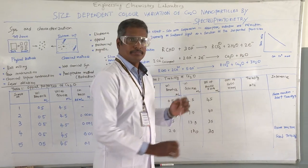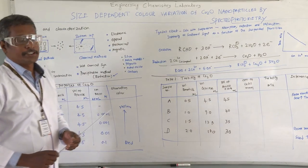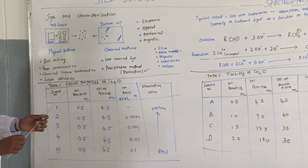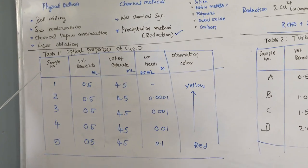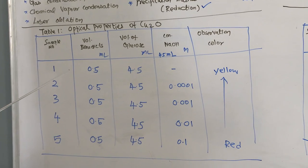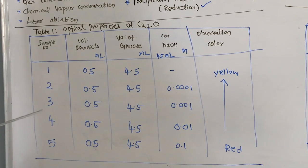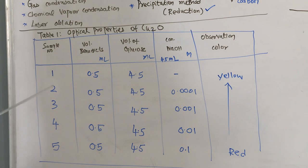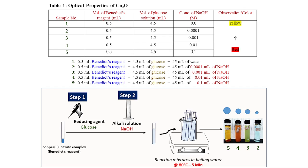This is the overall reaction. The first part of the experiment is to measure the optical properties of copper oxide. Interestingly, whenever we change the size of the nanoparticles, they exhibit different colors — that is because of surface plasmon resonance. Smaller the size, it will show a different color; larger the size, it will show a different color. This is due to the amount of electron cloud present on the surface of the nanoparticles that responds to incident light.